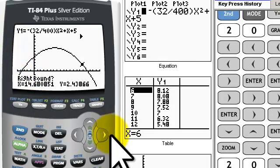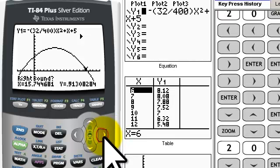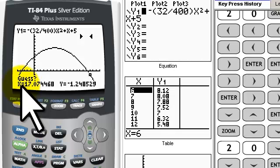Now it wants me to go to the right bound. So I'm going to get a little bit to the right of my zero and hit enter. And then it says, would you like me to guess? And I will say definitely. I will hit enter again.